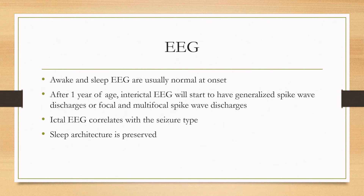The EEG at onset—both awake and sleep EEG—are typically normal. After one year of age, the interictal EEG may start having abnormalities such as generalized spike-wave discharges or focal and multi-focal spike-wave discharges. The ictal EEG normally correlates with the seizure type, and sleep architecture is preserved.